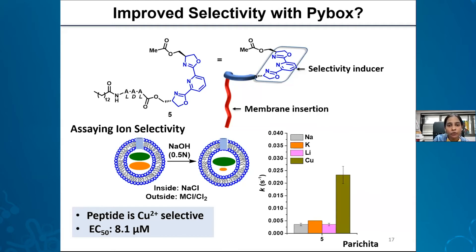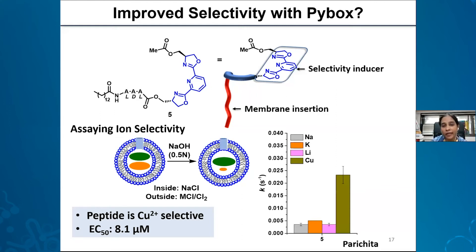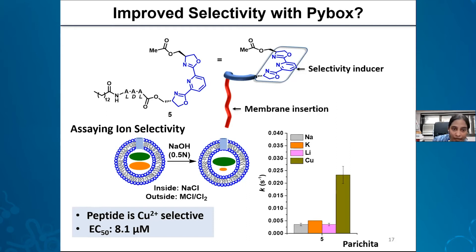Marimuthu asks: what is the driving force for ion transport? In all these cases what we are showing is passive transport — the driving force is the concentration difference between the external and internal vesicle solution. Why do ions go into the membrane in the first place? It depends on the ion binding motif or selectivity inducer. In the case of the macrocycles, we had many amide bonds and electron-deficient rings, which favored anions, whereas in the acyclic peptide scaffolds, ligands were chosen to bind cations.